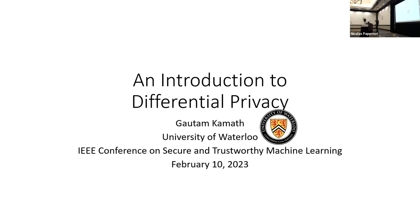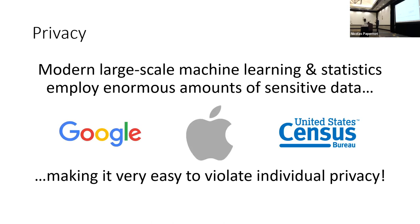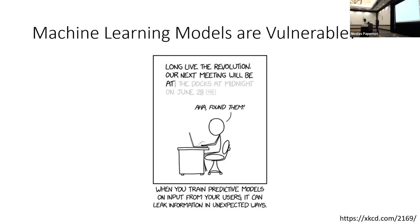I'll point to additional resources afterwards if you want to learn more beyond this one-hour tutorial. I don't think I have to motivate privacy too much to this audience, but I'll give a few examples to illustrate the style of disclosure we want to prevent. Let's start with this xkcd comic: an individual typed into their email client 'Long live the revolution, our next meeting will be at...' and asked the ML system to autocomplete — it suggested 'the docks at midnight on June 28th.'